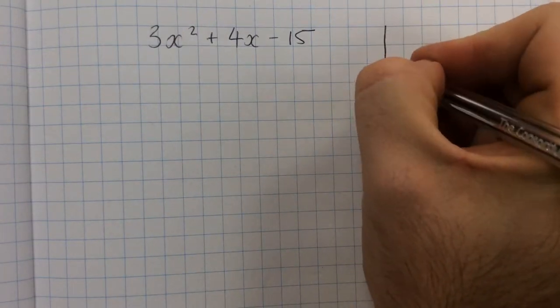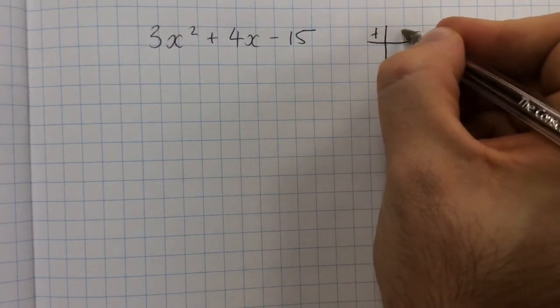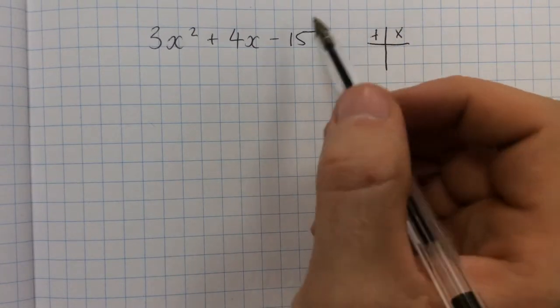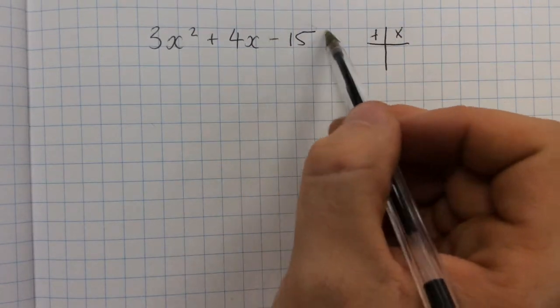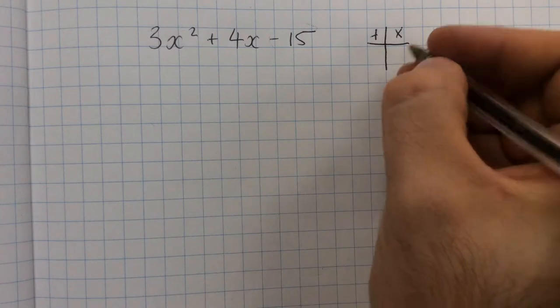We start the same way, we're looking for numbers that add and numbers that times. The difference is, when we're looking for the numbers that times, it's this number on the end times by whatever that number at the start was.